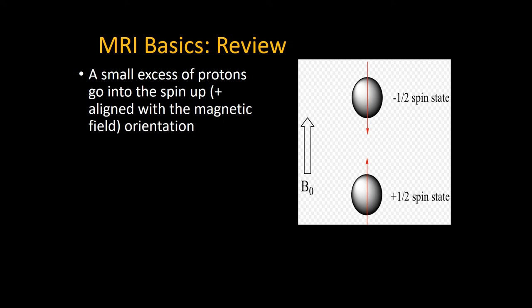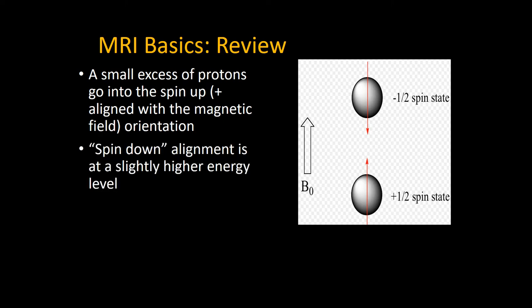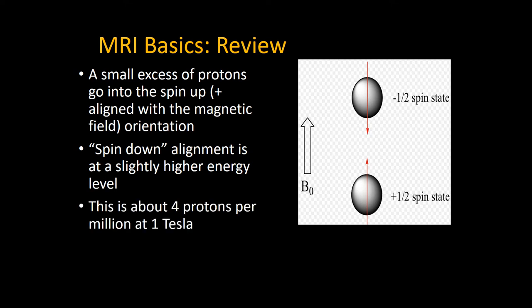That it cannot be measured directly is a really important point, because the way we measure signal in MRI is quite complicated. It's related to the fact that we can't measure it directly — it's in the same path as the magnetic field at baseline. We have to manipulate it by hitting all those protons with an electromagnetic pulse. The small excess of protons going into the spin-up position is only on the order of about four protons per million at a field strength of one Tesla — very, very tiny changes that we're set up to detect for MRI.